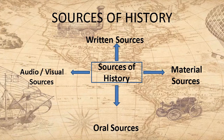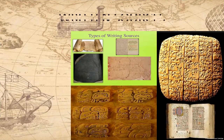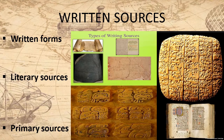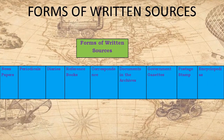We can write history with the help of these sources. Written sources are the sources that are available in any written forms. Written sources come under the category of literary sources and are actually served as the primary sources in research writing and are an authenticated source of information about the topic. We have different forms of written sources such as newspapers, periodicals, diaries, reference books, correspondence, documents in the archives, government gazettes, poster stamps, and encyclopedias.